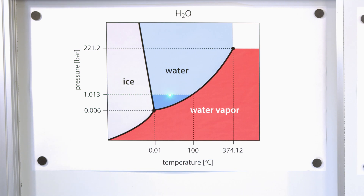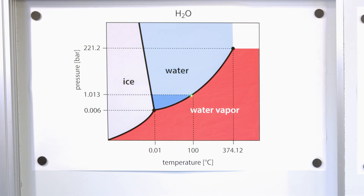This dotted line represents everything you've ever seen about water — it's always at one atmosphere of pressure. When water is below 0 degrees Celsius, it's what we call ice. But once we warm it up past 0 Celsius, it enters the liquid water phase. And once we increase it past 100 Celsius, it's in the vapor phase. So solid, liquid, gas is what you see every day dealing with water at one atmosphere.